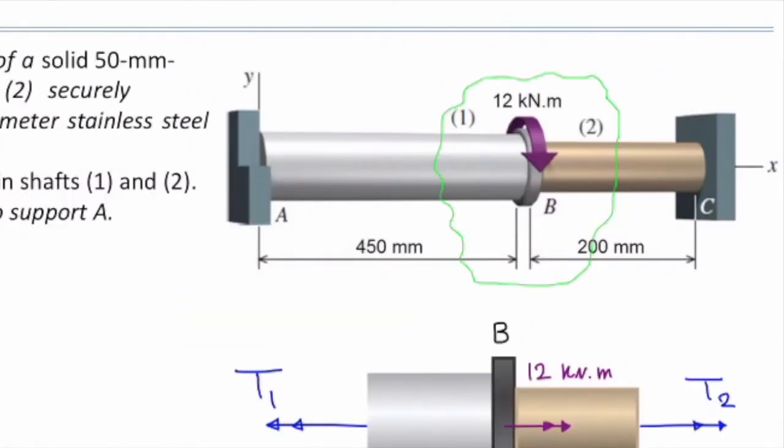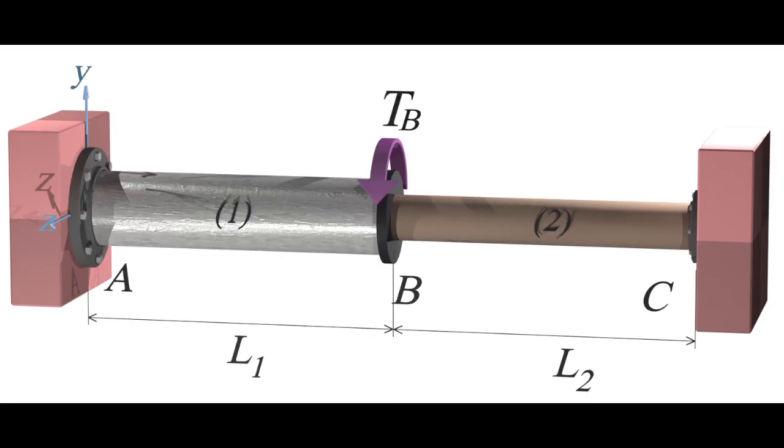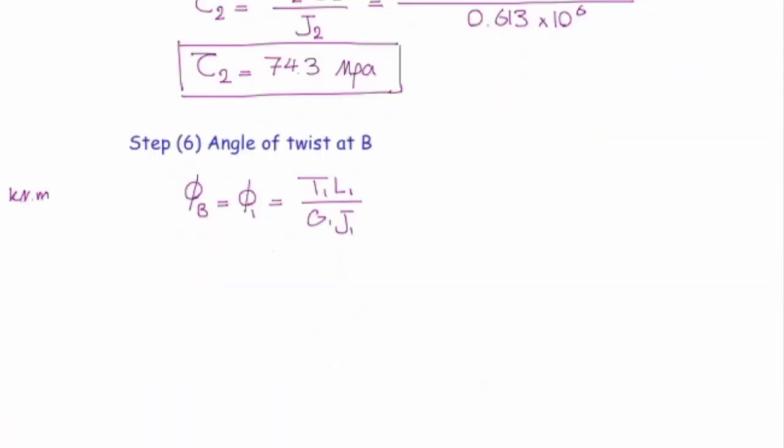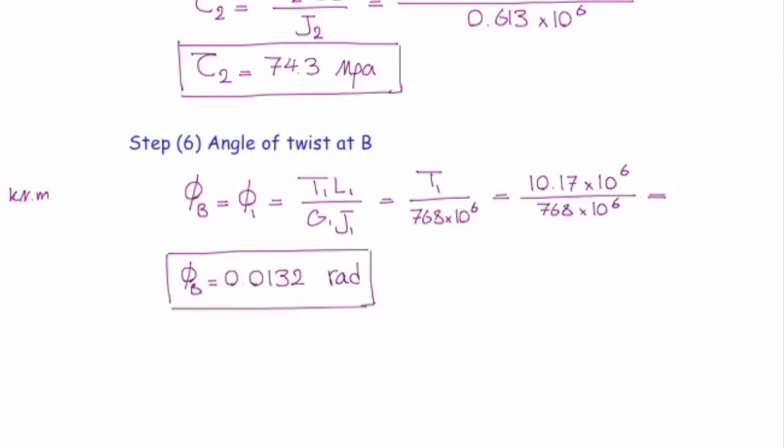Now to answer the last part. What is the rotation angle of flange B relative to A? How we can determine the relative twist of B compared to A? We need to see what connects these two points together. These two points, points B and A, are connected by shaft number 1. So, I can write down the angle of twist at B or phi B is equal to the twist in shaft number 1 or phi 1. How much is phi 1? TL over GJ or T1 divided by 768 times 10 to the sixth. Let's plug it here. And we know how much is torque. Plug it into this equation. And that gives us angle of twist at flange B compared to A.